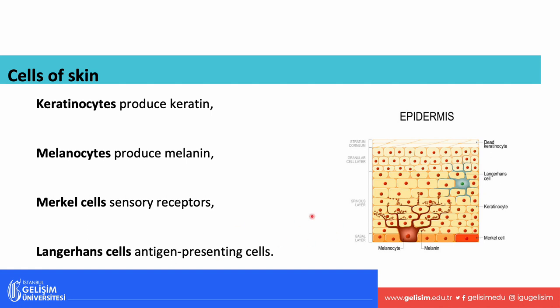The epidermis is made up of many different types of cells found in different areas of the epidermis. Among those different types of cells, we have keratinocytes, melanocytes, Merkel cells, and Langerhans cells. The keratinocytes' job is to produce keratin. Keratin makes these cells a little bit harder, a little bit tougher, and it coats them — making them a little bit water resistant.